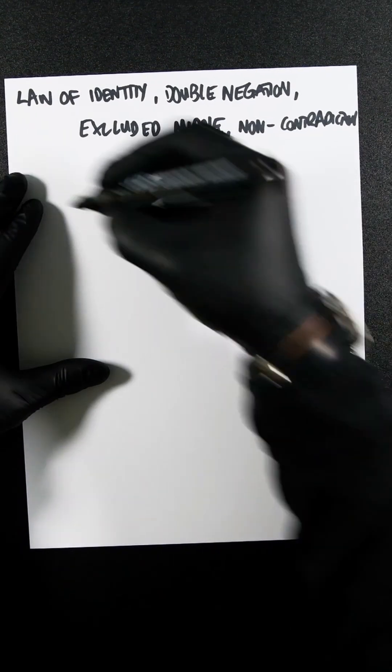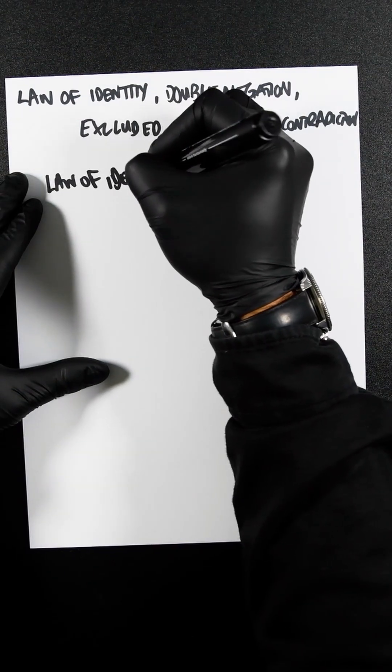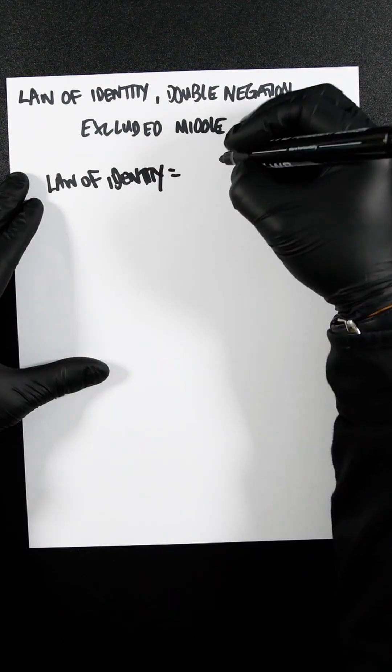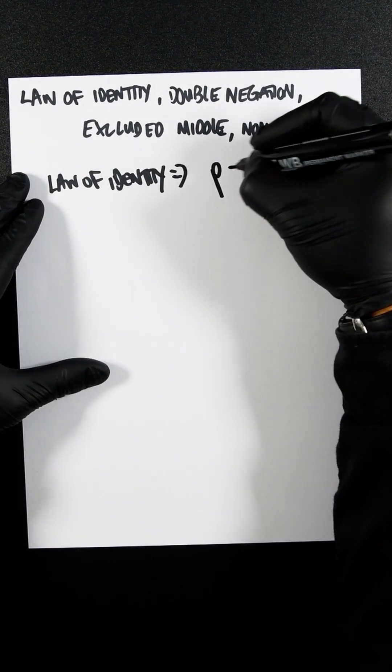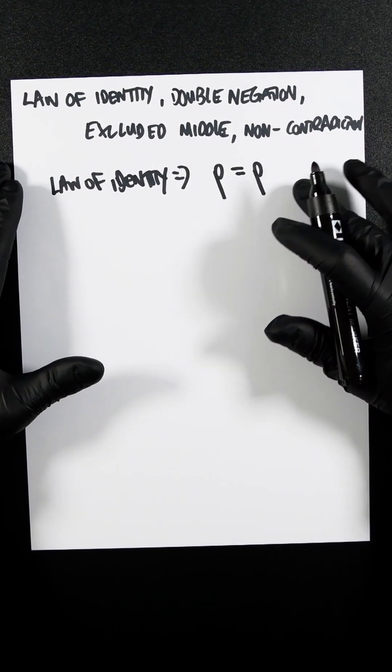So the first thing is pretty simple, the law of identity, which is going to be P equals P. I don't think that needs any explanation.